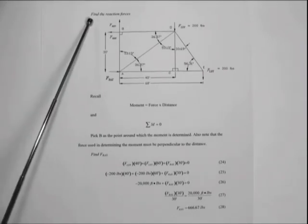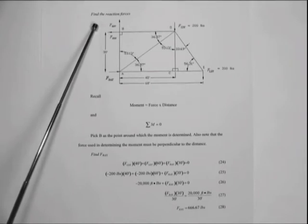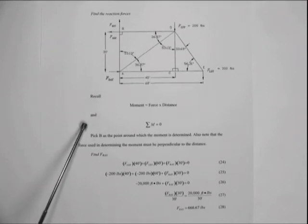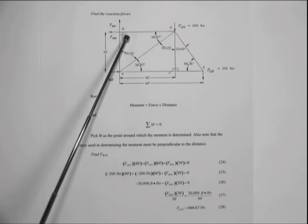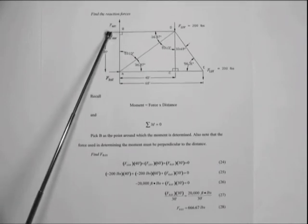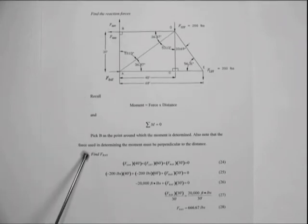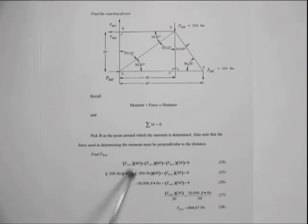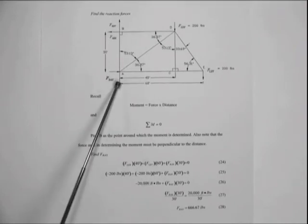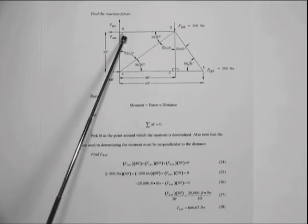The next step, step three, is to find the reaction forces occurring on our truss. Recalling that the moment about a point equals the force times the distance, and that the sum of moments around any point must equal zero, we begin to solve. We have chosen point B as the point about which we will take the moments, because the two reaction forces there pass through point B and therefore have no impact on the total moment. To find the reaction force at point AX, we substitute in our three external forces, multiplying each force by its distance from point B: the force LDY at 40 feet and the external load at point E at 60 feet, and the force RAX times its distance of 30 feet.